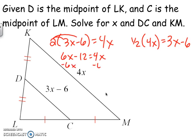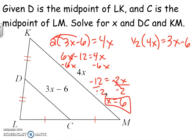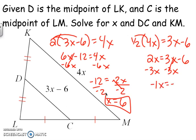Subtract 6X on both sides and get negative 12 equals negative 2X. Divide by negative 2 and get X equals 6. Would you get the same thing the other way? Yes, because half of 4X is 2X. Subtract 3X from both sides, and get negative X equals negative 6, so X equals 6. You get the same answer no matter which way you prefer.